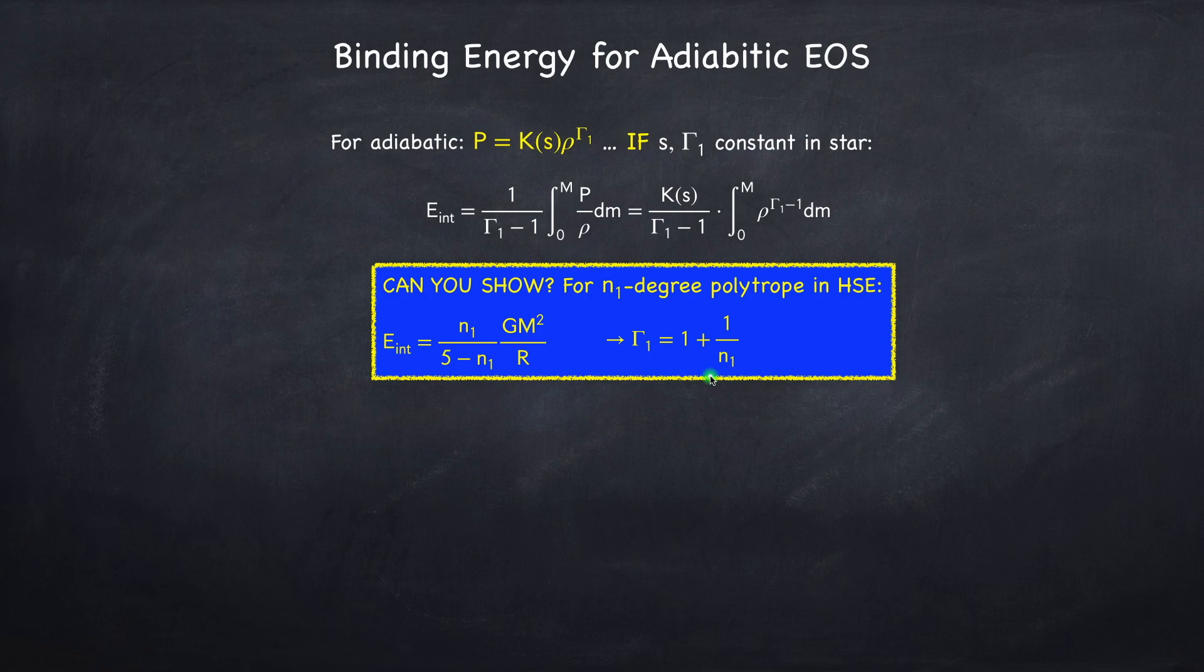Which in our case we already know is 3 halves, so gamma 1 is 5 thirds. And if n1 equals 3 halves, you can plug that in and you'll get back the Virial theorem.